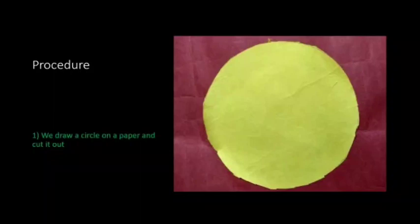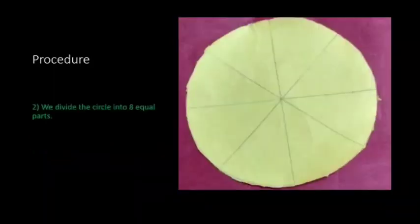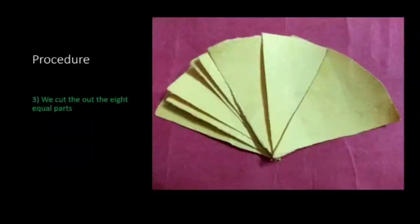The procedure is: we draw a circle on a paper and cut it out. The next step is we have to divide the circle into eight equal parts.